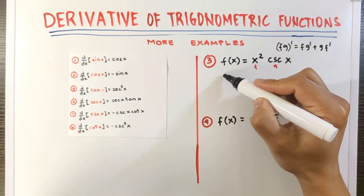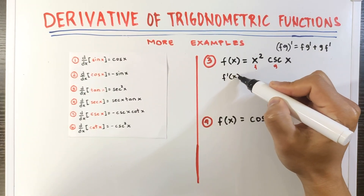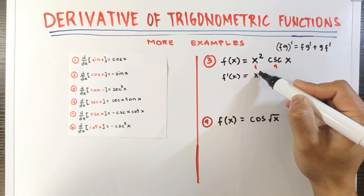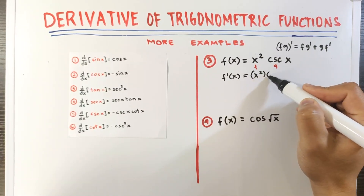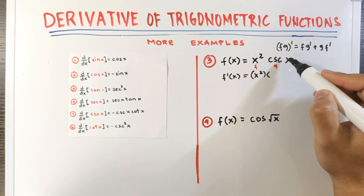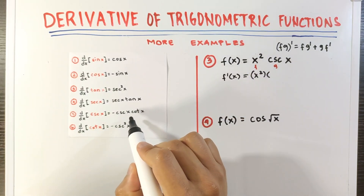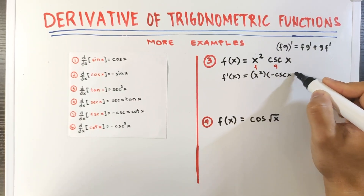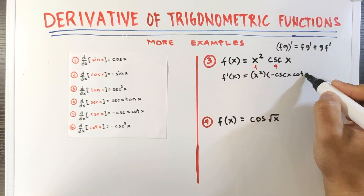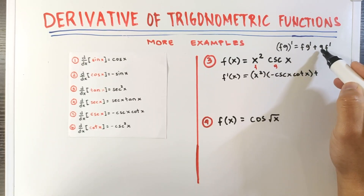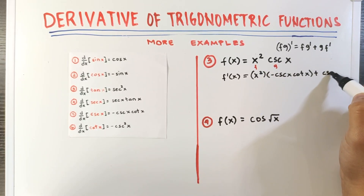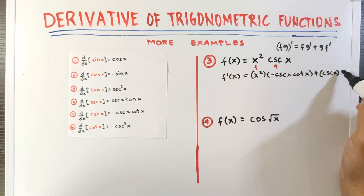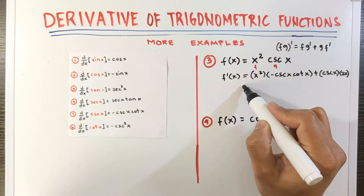In this function, f is x squared and g is cosecant x. So the derivative is: copy x squared, multiply by the derivative of g — the derivative of cosecant x is negative cosecant x cotangent x — plus g, which is cosecant x, times the derivative of f — the derivative of x squared is 2x. Let's simplify.